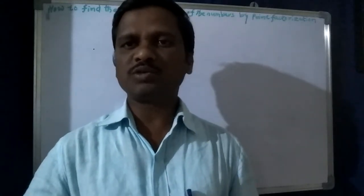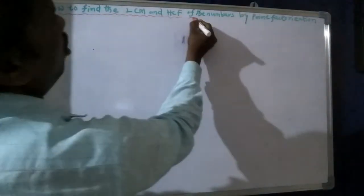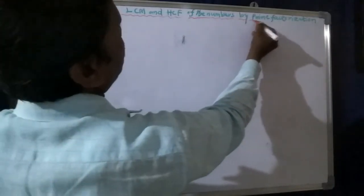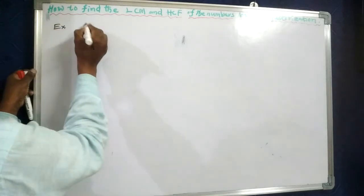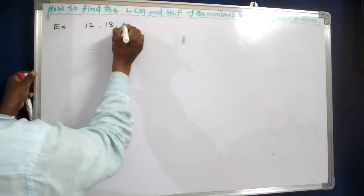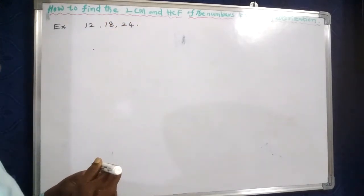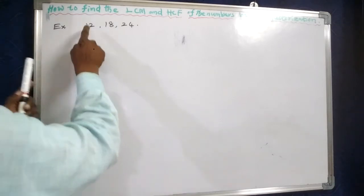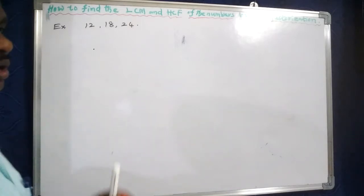Today we are going to learn about how to find the LCM and HCF of numbers by prime factorization. For example, find the LCM and HCF of 12, 18, and 24.